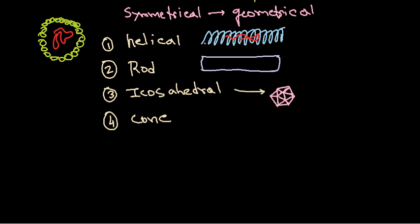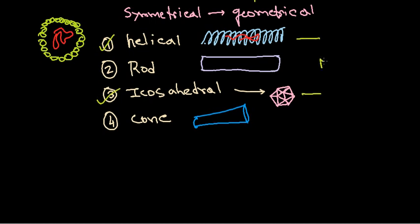The fourth type of structure is called the cone type, which is a cone-shaped structure like that. Among these four types, two are the most common structures found in the maximum virus particles — one is helical and the other is icosahedral. These are the most common structures usually found.